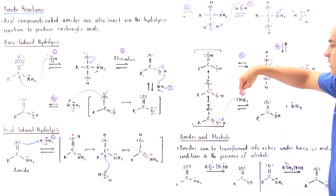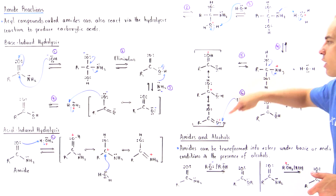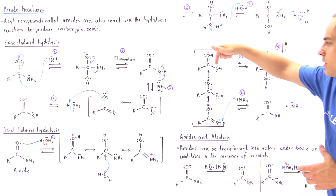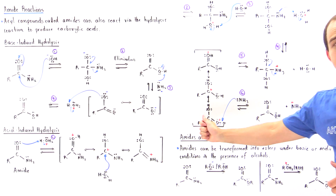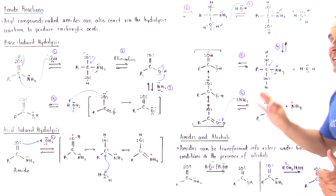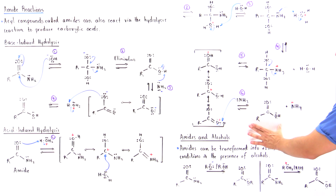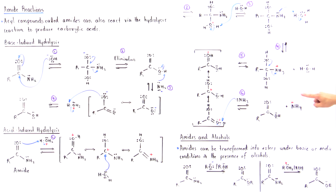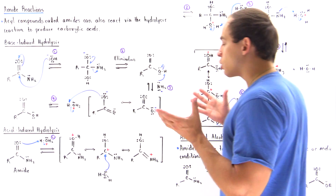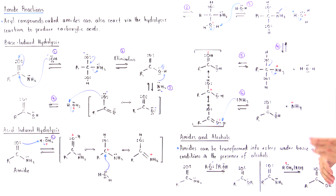We form NH3 with a lone pair of electrons on the nitrogen, and we form the resonance-stabilized protonated carboxylic acid, which has three resonance forms. In a final step, the ammonia formed in step five deprotonates the H off our oxygen, giving us the final product — carboxylic acid — as well as ammonium. The net result is the same carboxylic acid in both base- and acid-induced hydrolysis of amides.